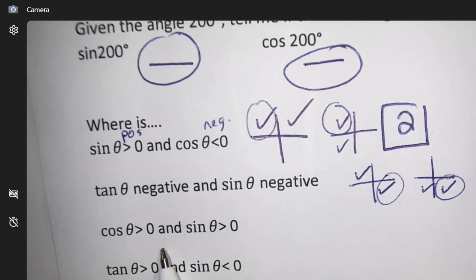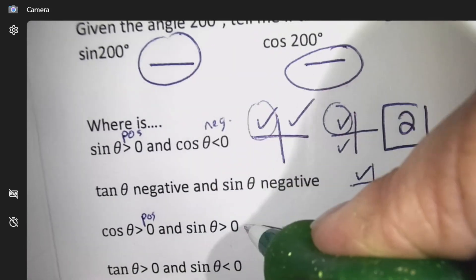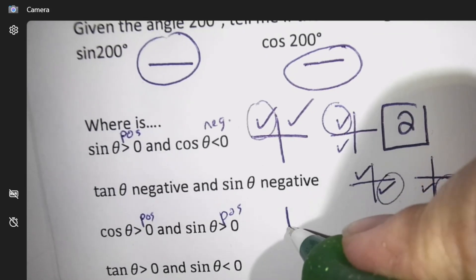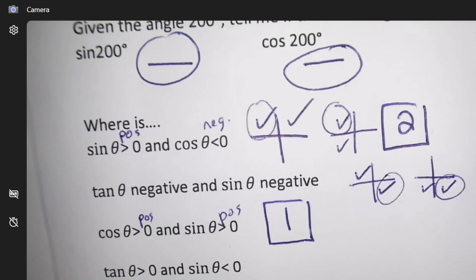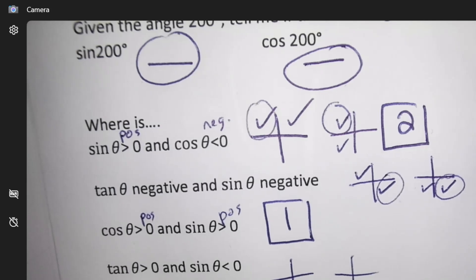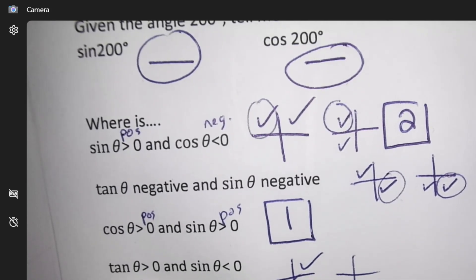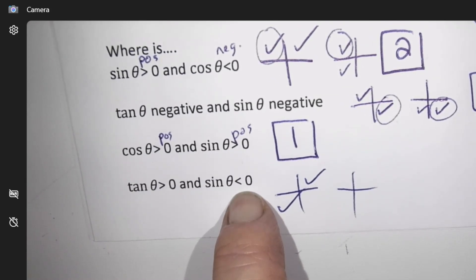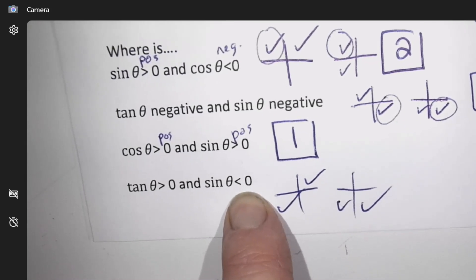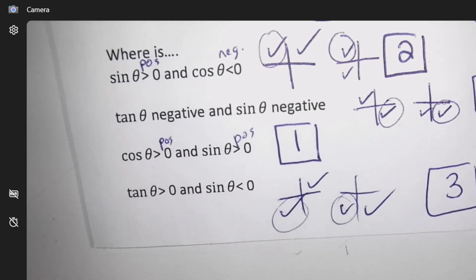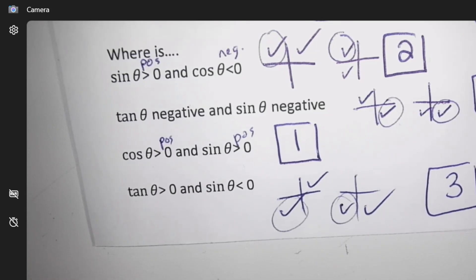I'm not going to draw this one because this is positive and this is positive. Which quadrant is the only quadrant where you have two things positive possible? Quadrant 1 is the only possibility to have two things be positive. Last one. Tan positive, diagonals, some kind of diagonal split. If sin negative, sin negative is down. So that pick is quadrant 3.